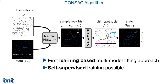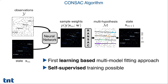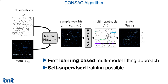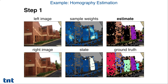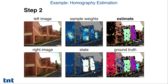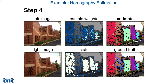We present CONSAC, the first learning-based multimodal fitting approach. At its core is a neural network which predicts sampling weights for each data point recurrently, conditioned on previously found models. We can perform training in a supervised as well as self-supervised manner. CONSAC focuses on different parts of the data step by step and guides a RANSAC estimator to find all model instances sequentially.